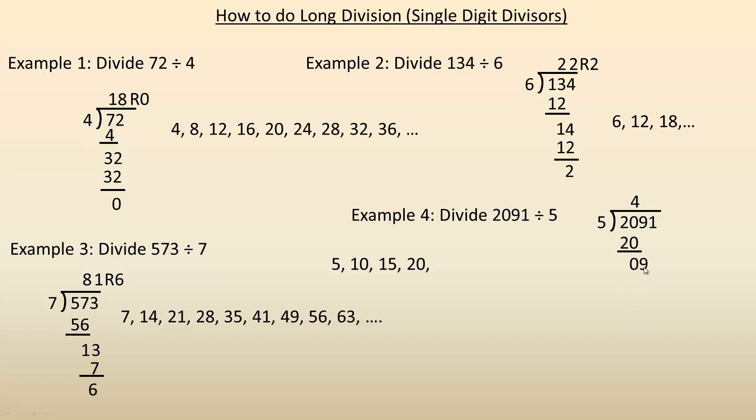So how many times does 5 go into 9? Well, it only goes in once, because you see the second multiple of 5, the 10, is a little bit bigger than 9. So 5 only goes into 9 once, so 1 times 5 is 5. 9 minus 5 is 4, and we bring down this 1.